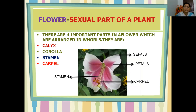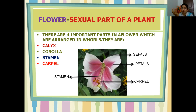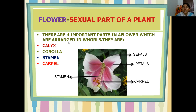We will now enter into the main topic: the flower, the sexual part of a plant. A flower contains its parts in whorls — whorls meaning circles. Each flower has four whorls: the outermost, then next, next, and the innermost. The four important parts arranged in whorls are calyx, corolla, stamen, and carpel. The outermost whorl is calyx, the second whorl is corolla, the third whorl is stamen, and the innermost whorl is carpel.